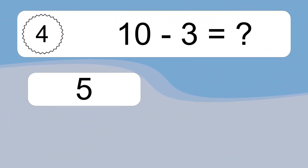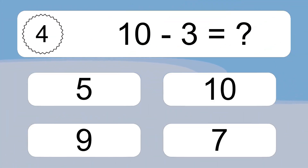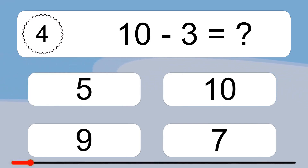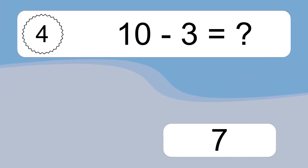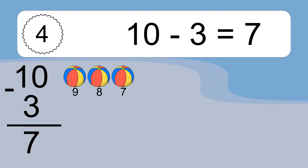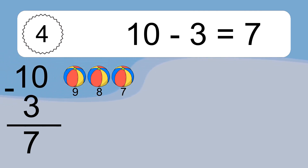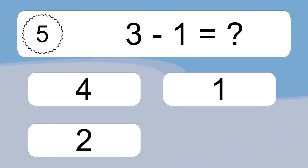10 minus 3 equals what? 10 minus 3 equals 7. Let's count it: 9, 8, 7. 10 minus 3 minus 1 equals what?